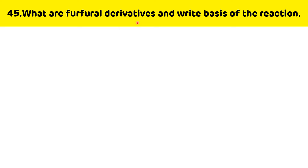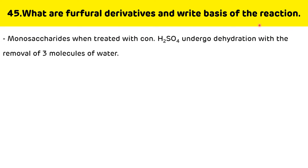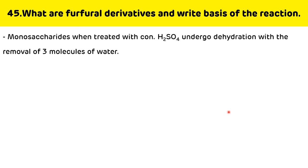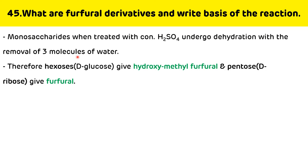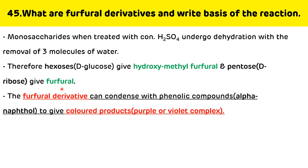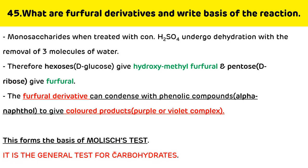What are furfural derivatives and what is the basis of the reaction? Furfural derivatives are produced when monosaccharides treated with concentrated H₂SO₄ undergo dehydration with the removal of three molecules of water. Hexoses such as D-glucose give hydroxymethyl furfural, and pentoses such as D-ribose give furfural. These furfural derivatives condense with phenolic compounds like alpha-naphthol to give a purple or violet complex, forming the basis of the Molisch test.